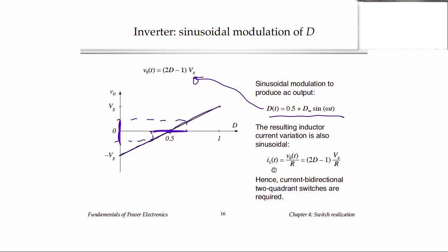The inductor current, which is the load current, will also vary sinusoidally in the same way. So again, it's positive or negative depending on which part of the sine wave we're on, and so we need current bidirectional switches.